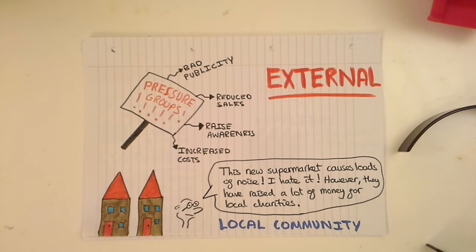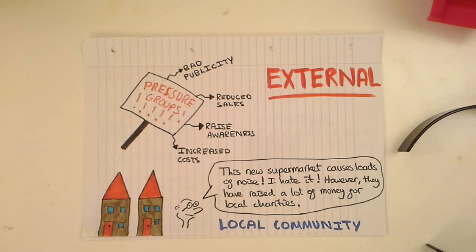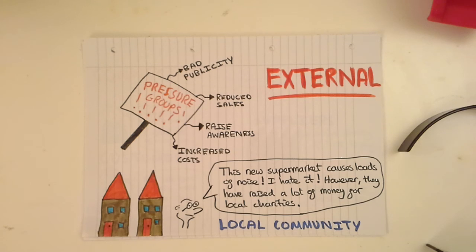A group of stakeholders who are likely to have a negative impact on our business are pressure groups. They're basically groups of people who are going to protest or do some sort of other action to change people's decisions or cause something to happen. They could protest and give bad publicity to a business, which could in turn reduce their sales. They may start a campaign to raise awareness of some negative impact a business causes, and the business might have to use easier-to-recycle packaging, which is going to be more expensive to manufacture.